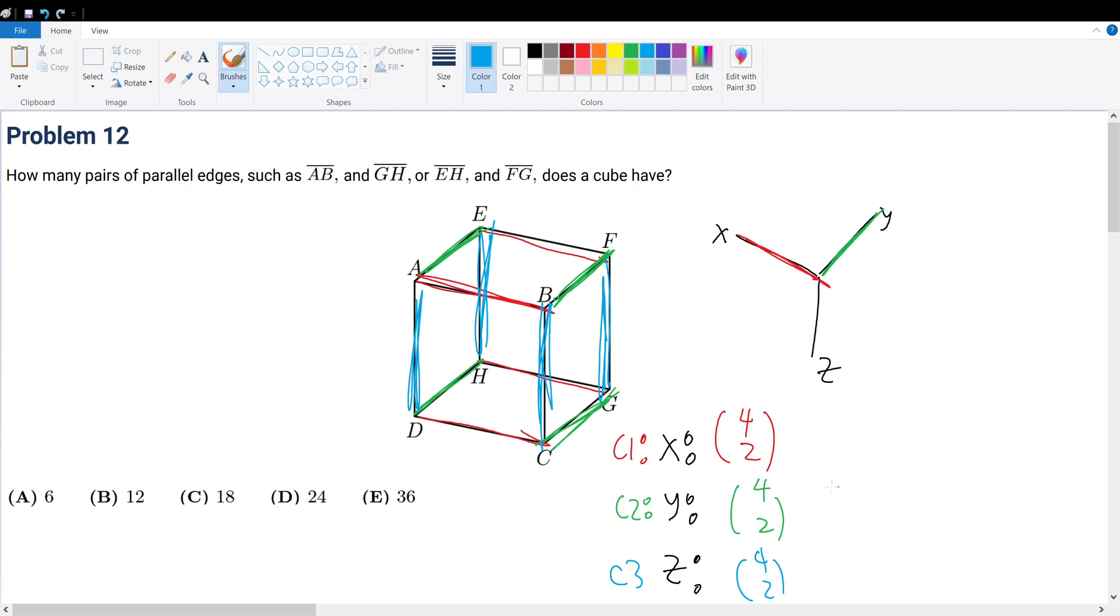We sum cases. So the sum of everything would be three times four pick two. And what is that? That's three times four times three divided by two, which is the same thing as two times nine, which is 18. So your final answer will be answer choice C.